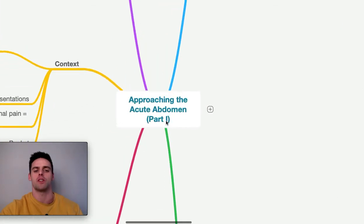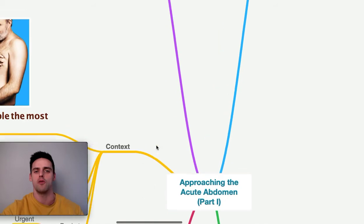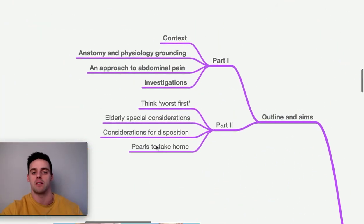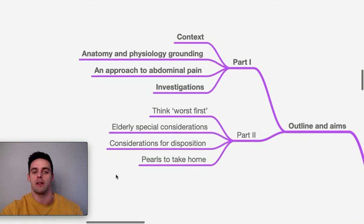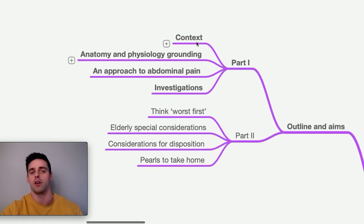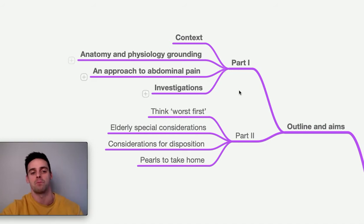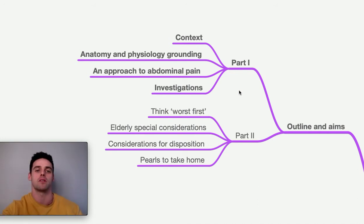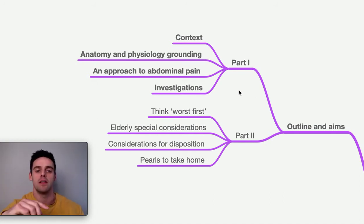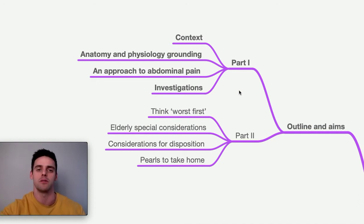Today I'm going to be talking about approaching the acute abdomen, part one. This is a two-part talk about acute abdominal pain and how we approach it. We'll cover the context of acute abdominal pain, anatomy and physiology particularly with regards to pain transmission and localisation, a framework for dealing with patients who have abdominal pain, and why investigations may not be as straightforward as initially taught at medical school.